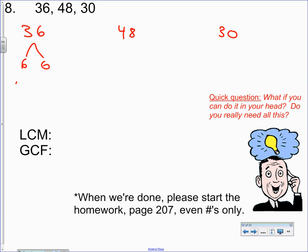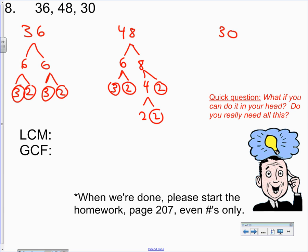36. Six times six. Three and two. Three and two. Three and two. Prime numbers. Done. 48. Six times eight. Three and two. Four and two. Two and two. Prime numbers. Done. 30. Six times five. Five is prime. Six is three and two. Done.